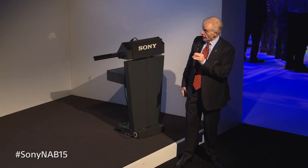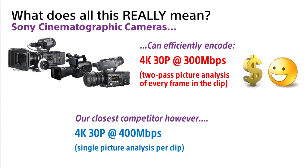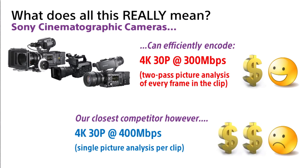What does it all mean in reality? All of our cinematographic cameras have XAVC built in. I can record 4K at 30 frames per second at a very modest 300 megabits per second — a very small file size, which costs less in storage. Our closest competitor doesn't have this technology and has to record at 400 megabits per second or even higher, meaning their file size and storage costs are greater. This is one of the advantages of XAVC.